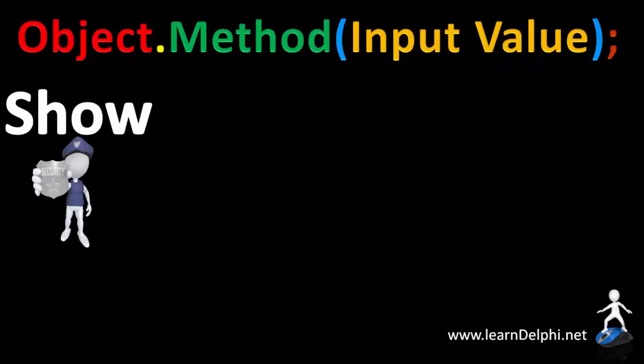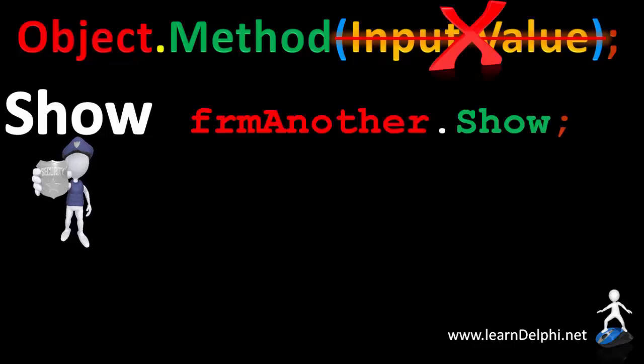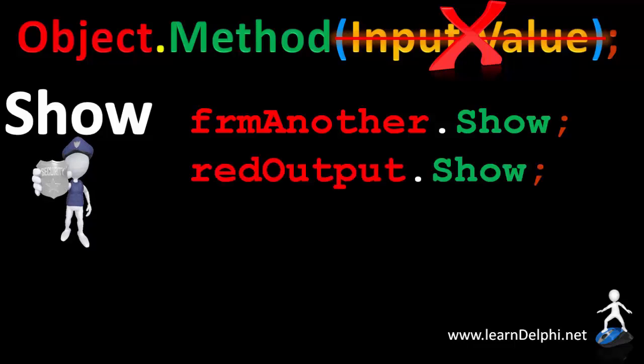The next method we will look at is the show method. The show method also doesn't have input values. This statement shows a form named frm another. And this statement shows a rich edit named red output.